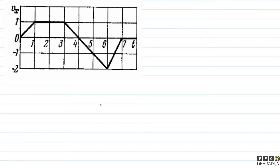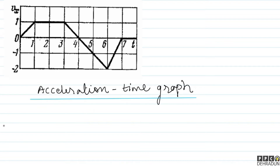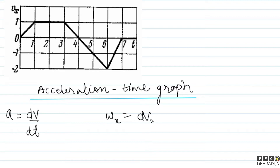Toh bachyo, sabse pehle mera focus rahega acceleration wx as a function of time banane ke liye. Pehle main acceleration versus time graph ke baare mein analyze karne wala hoon. Humein yeh pata hai ki acceleration kya hota hai — acceleration basically hota hai d of v upon dt. Toh yahan par saari cheezein x ke along hain, toh wx = d of vx upon dt. Matlab, basically is graph ka slope dekhna hai.